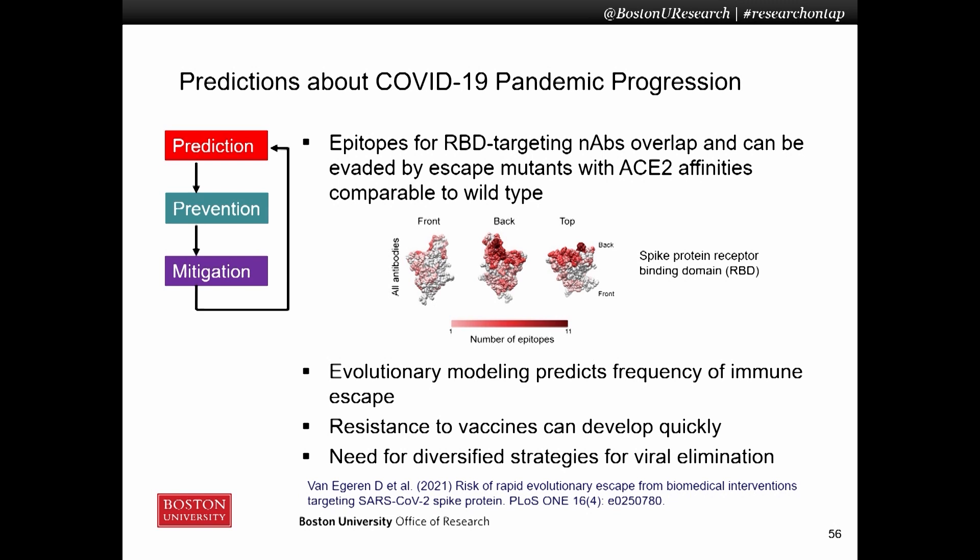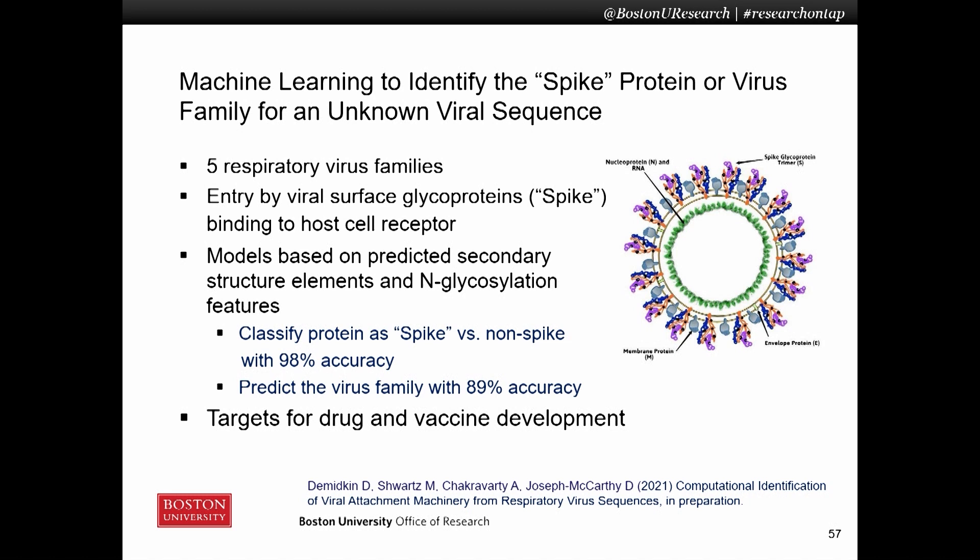We then performed evolutionary modeling to predict the frequency of immune escape, and we showed that resistance to vaccines can develop quickly. Taken together, this points to the need for strategies for viral elimination that are diversified across molecular targets and therapeutic modalities.